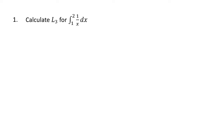The first one is asking us to calculate L3 for the integral from 1 to 2 of 1/x dx. L means left-hand endpoints, which means we're finding areas of rectangles using left-hand endpoints of subintervals. We want to take this interval from 1 to 2 and break it up into three pieces — that's what this 3 is telling us. That's how many rectangles we're going to have, which means we're going to have two dividing lines in between the 1 and the 2 that are going to be the bases of our three rectangles.